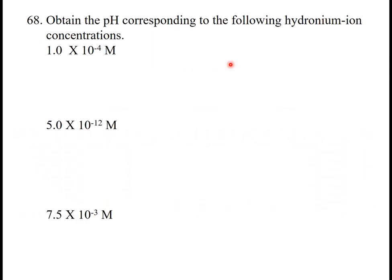In this problem, they give you the hydronium ion concentration, and they want you to find the pH. So pH is simply the negative log of the hydronium ion concentration. If this is the hydronium ion concentration here, it's simply the negative log of 1.0 times 10 to the minus 4th, and you get 4.